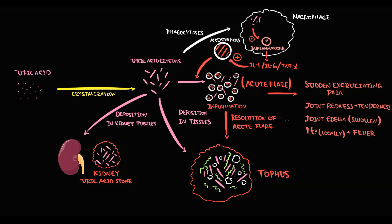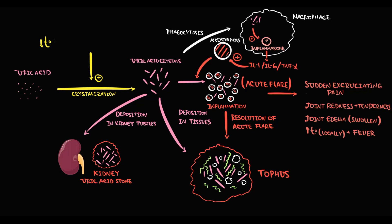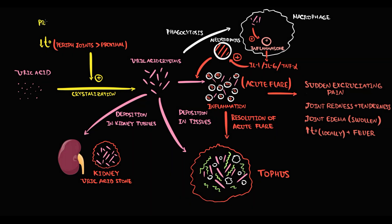When inflammation resolves, the acute flare returns to the chronic phase, and all uric acid crystals become part of the tophus again. This cycle of chronic phase to acute flare repeats cyclically. Two major factors cause uric acid crystallization: low temperature, which is why gout more commonly develops in peripheral joints; and previous trauma to a joint, which is why gout most commonly affects the first metatarsophalangeal joint, as it is a weight-bearing joint under the most severe mechanical stress.